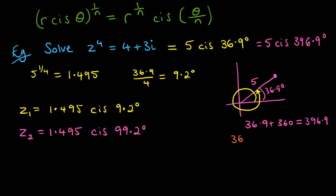Now if we continue that logic, we can carry on adding as many lots of 360 as we need to. So we do 36.9 + 360k. That k is what we call the general form of this. So to get the next one, we would add on another 360 and we get 729.9°. And if we divide that by 4, we get our third root to be 1.495 cis 182.5°.